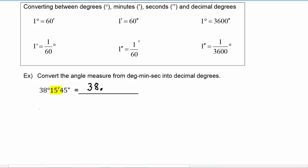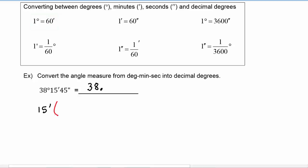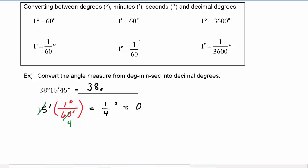We have 15 minutes, and we know that one degree is equal to 60 minutes, so we can use that conversion factor. We want to go from minutes to decimal degrees, so we put the one degree in the numerator and the 60 minutes in the denominator to cancel out the units. 15 divided by 60 is one fourth, which means this is 0.25 degrees. So 15 minutes is the same as 0.25 degrees.